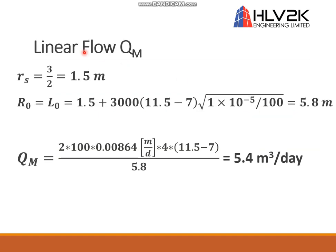For the linear flow, we calculate Qm. First, I calculated the zone of influence, which equals the radius of influence. For that, I also need the equivalent radius — in this case, half the width, which is 1.5 meters. The zone of influence works out to 5.8 meters. Substituting everything into the equation, we end up with 5.4 cubic meters per day for the linear flow rate.